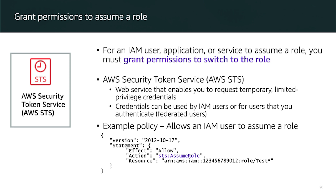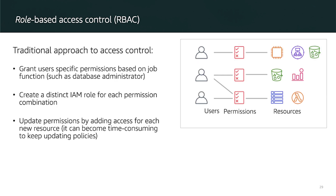You can also consider two different approaches to access control: role-based access control and attribute-based access control — both are really important for the exam. In role-based access control, historically used on-premises and in the cloud, you grant explicit access with pre-configured permissions. For example, if you have a database administrator, network administrator, and developers, instead of creating a new policy, you add users to both roles. However, maintaining permissions in this model requires consistently updating permission files each time a new resource is created.